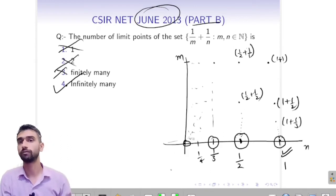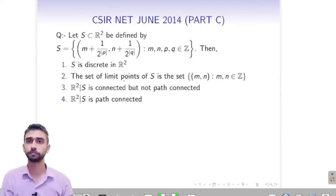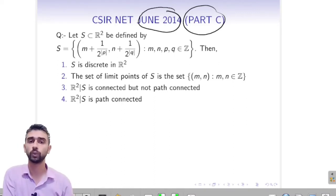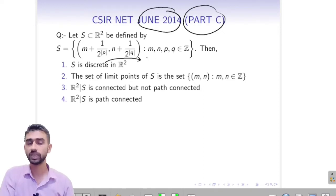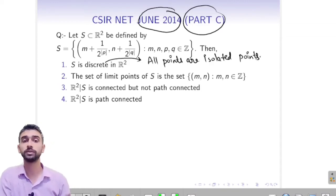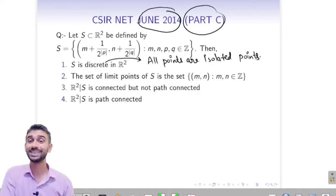The correct option is 4: infinitely many limit points. Next is a question from June 2014, Part C — more than one option can be correct. The set is {m + 1/2^p, n + 1/2^q} where m, n, p, q are integers. The first option says S is discrete. A set is discrete when all points are isolated — meaning no limit point belongs to the set.